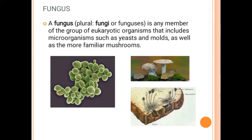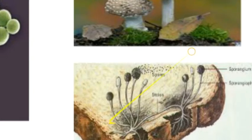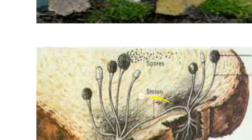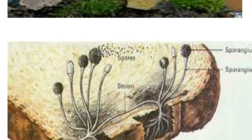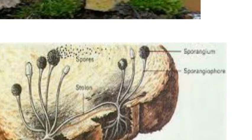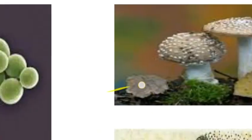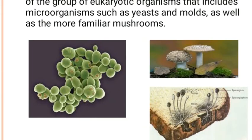Yeast is a microorganism, and so is bread mold. If you keep bread in wet, humid conditions for a long time, black spores will appear. We cannot see them with the naked eye, but under a microscope or magnifying lens we can see they form colonies on the bread. In this picture you can see spores of the mold, a mushroom, and yeast cells, which are microscopic.